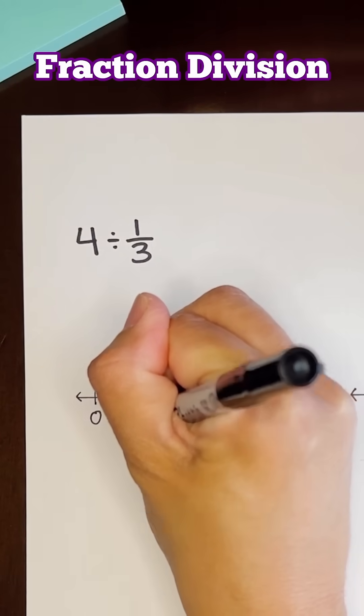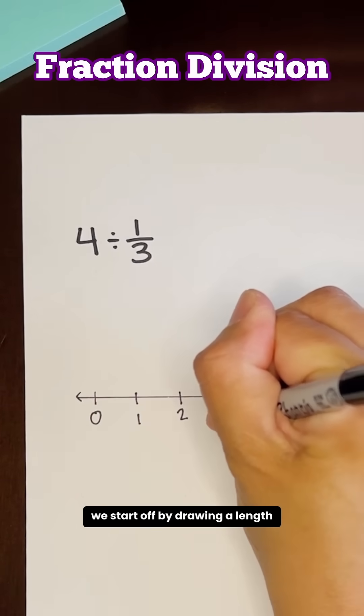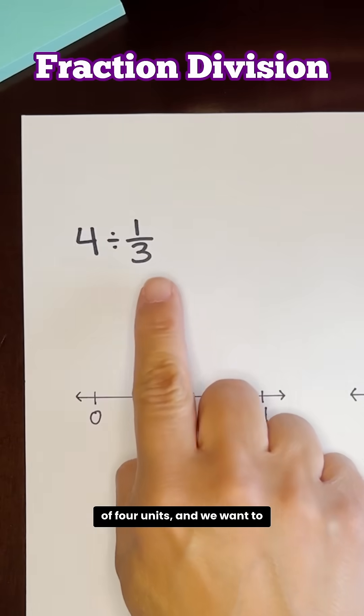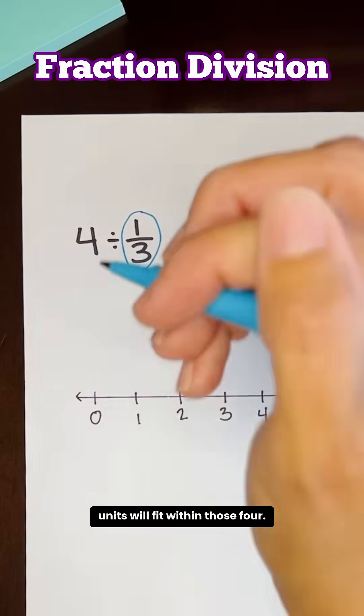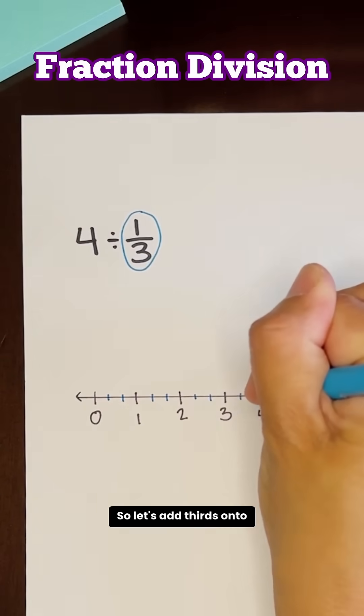For four divided by a third, we start off by drawing a length of four units and we want to see how many one-third units will fit within those four. So let's add thirds onto our number line.